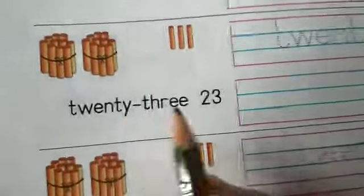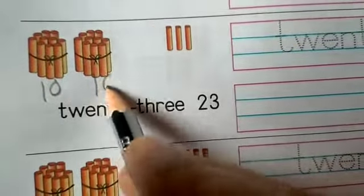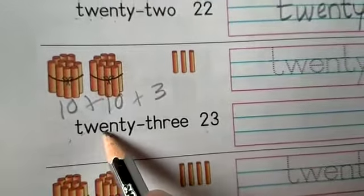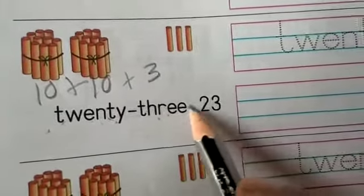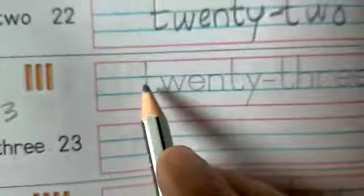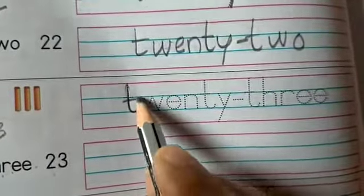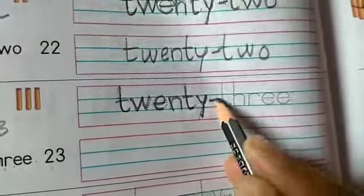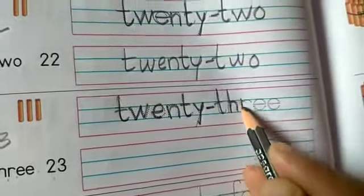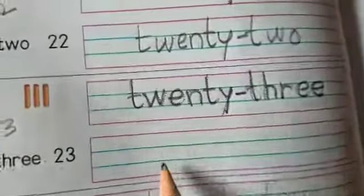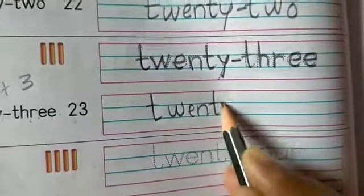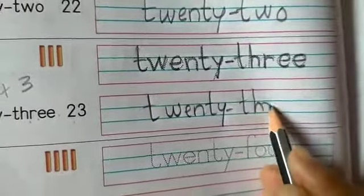Next one is 23. This one is a 10s bundle and this one is a 10s bundle, and here 3 extra. So it's equal to 23. Spell: T, W, E, N, T, Y, T, H, R, E, E — 23. First trace the letters, then rewrite in the below column.